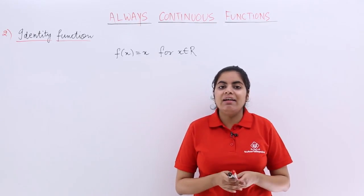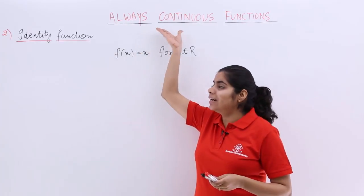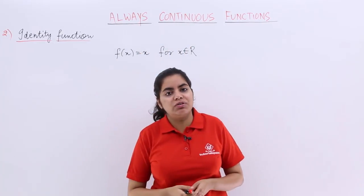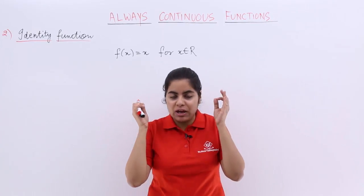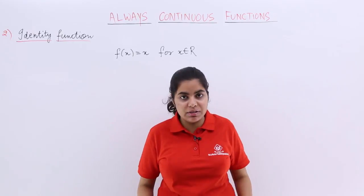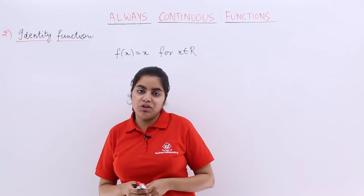In this video let's see another category of always continuous functions, which is known as identity function. We already know and have memorized that constant function is always everywhere continuous. The second type is identity function.